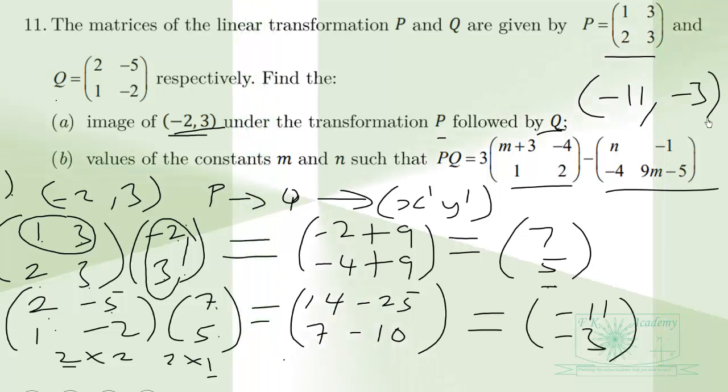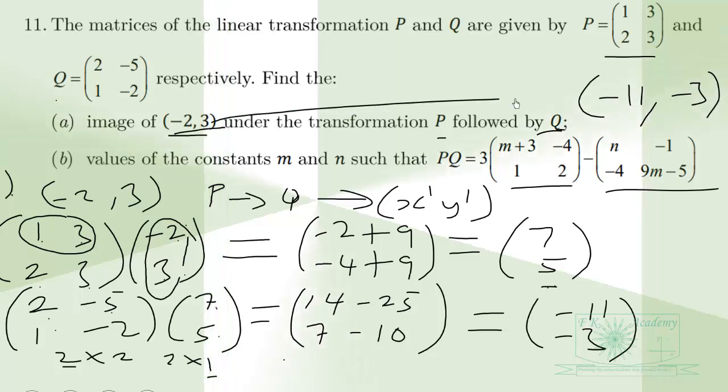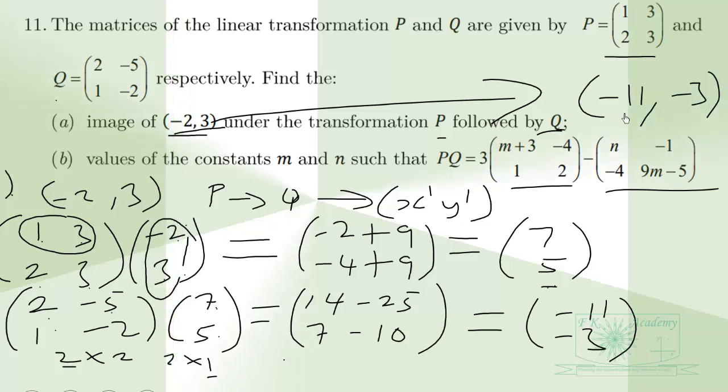Writing this back as a point, (-11, -3) is the image of (-2, 3) under the transformation P followed by Q.